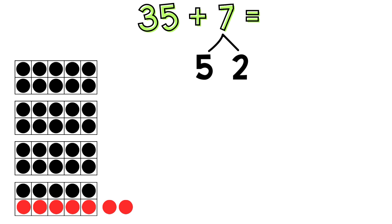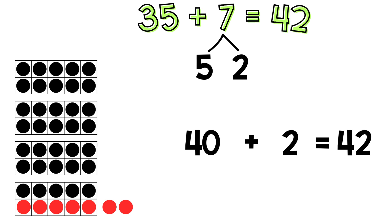Now I can write a new equation that's easier to solve. I have 4 10 frames filled, so that shows 40. I have 2 extra, so I'll add that to 40. 40 plus 2 equals 42. So 35 plus 7 equals 42. We made an easier problem to solve.